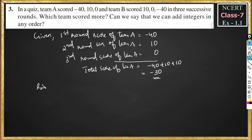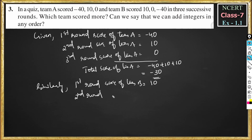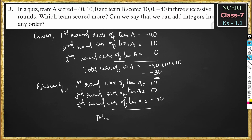Similarly, for team B: first round score is equal to 10, second round score is equal to 0, and third round score is equal to minus 40. By adding this, we get total score of team B, that is equal to 10 plus 0 plus minus 40, which is equal to 10 minus 40, that is equal to minus 30.